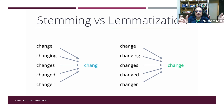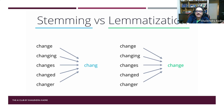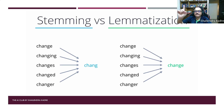Why do we do stemming and lemmatization in the first place? In a large document, 'change' may appear as 'change', 'changing', 'changes', 'changed', and 'changer'. We don't want to keep them as separate features — we want to reduce them to one base form. So wherever different forms of 'change' appear, we reduce them to the base form 'change' and keep it as one feature. This is part of data pre-processing. Lemmatization converts to the proper base word and is more towards preserving meaning, while stemming simply removes the suffix.